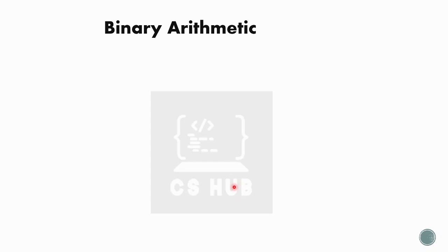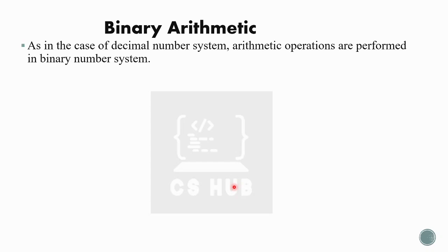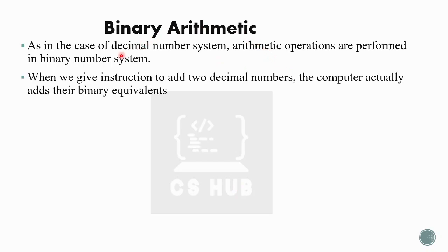The corresponding equivalent binary will be used. Binary addition or subtraction is performed on the binary equivalents. That is why we learn binary addition and subtraction. As in the case of the decimal number system, arithmetic operations are performed in binary. When we give instructions to add two decimal numbers — for example, 23 plus 66 — the computer actually adds their binary equivalents. Those numbers are converted to binary form and the computer adds that binary form.